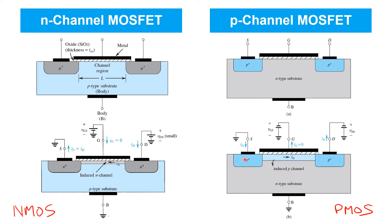On the other hand, in p-channel transistors, holes are the majority charge carriers. So the convention is that the source should be the higher potential and the drain is the lower potential. The source is the source of the majority carriers — holes. Holes enter the source and exit the drain. With a net flow of positive charge carriers from source to drain, we have positive current flow in the direction indicated. So in the p-channel transistor, current typically flows from source to drain, whereas in the n-channel transistor it flows from drain to source, and the polarity of the drain source voltage is typically flipped in the p-channel transistor.